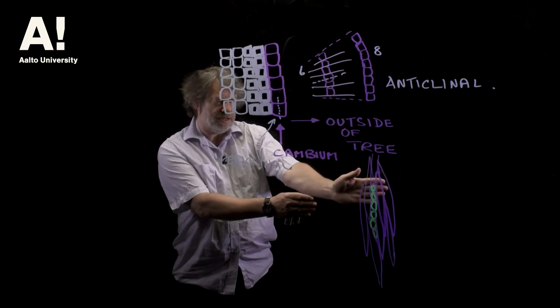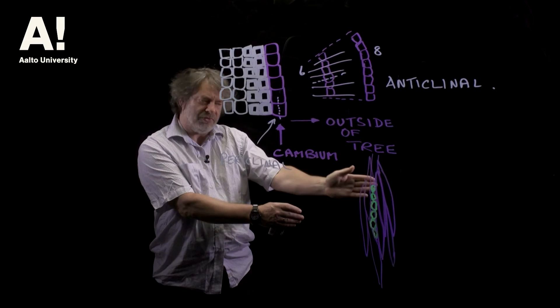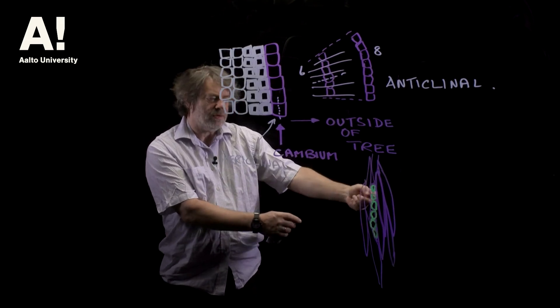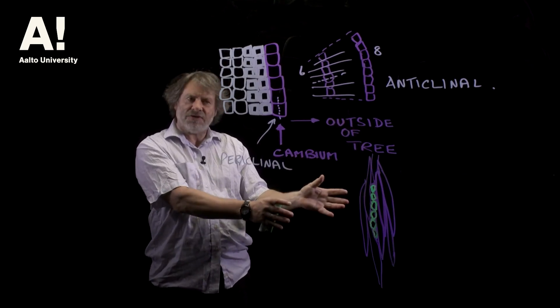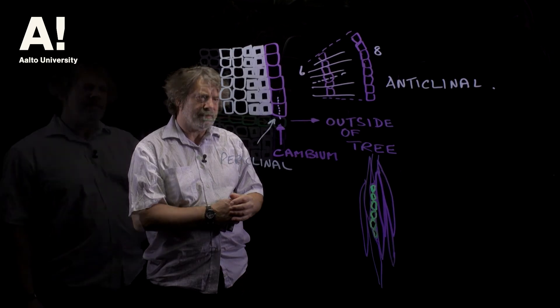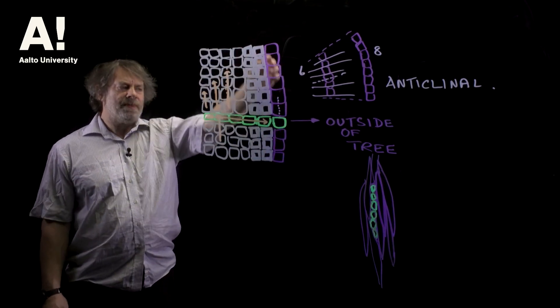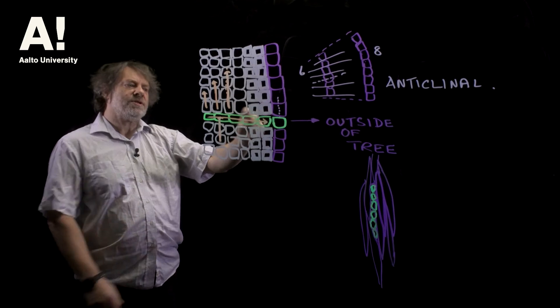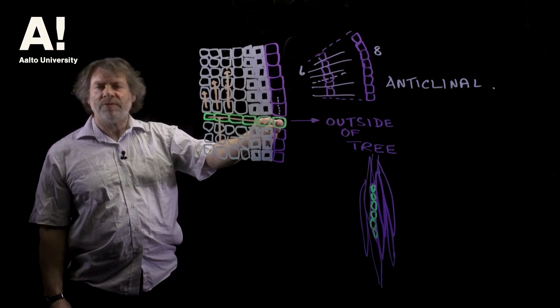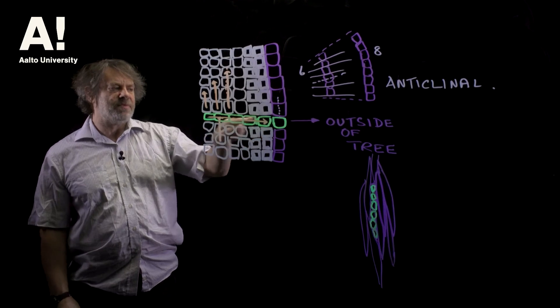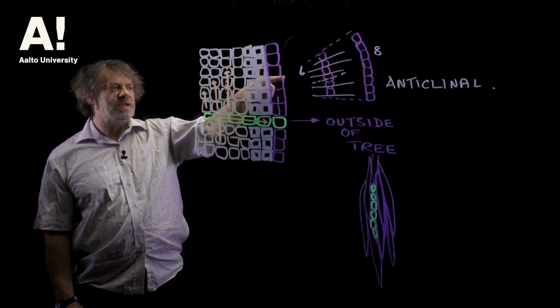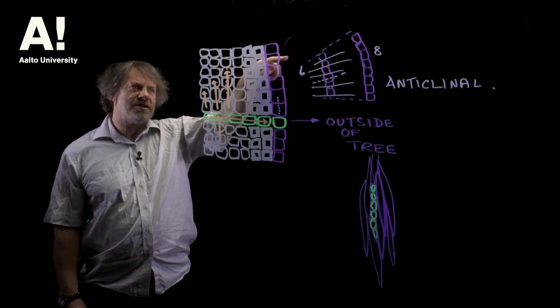So as this cambium layer moves out away from you it's laying down not just these tracheids but also these ray cells. This is obviously for a softwood I'm not illustrating a hardwood in this case. So this shows the cambium layer. The cambium layer is moving outwards. This is an initial which is forming the parenchyma cell so it's laying down parenchyma cells as it's moving outwards. These initials are laying down the tracheids as they move outwards.